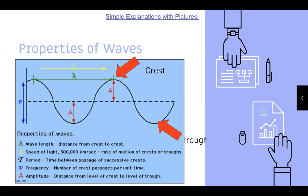A period is the time between the passage of successive crests — the time it takes for a whole wavelength to travel. Frequency is the number of crest passages per unit of time, represented by that blue line marker. There are mathematical ways to figure out frequency and period. Lastly, amplitude is the distance from the equilibrium line to the crest or from the equilibrium line to the trough.